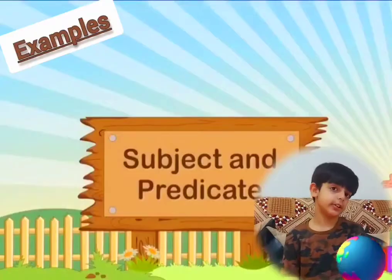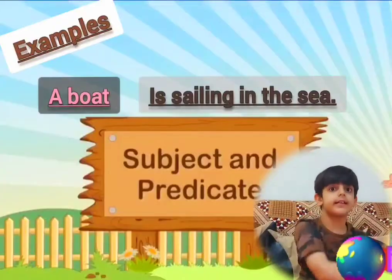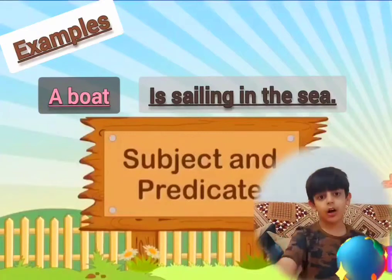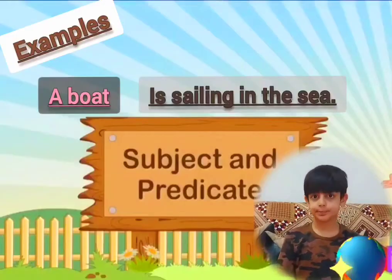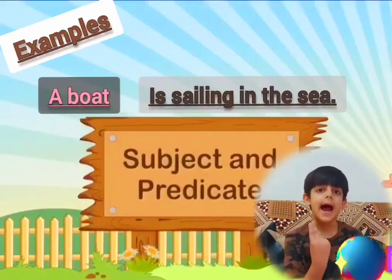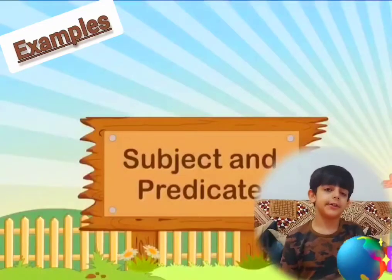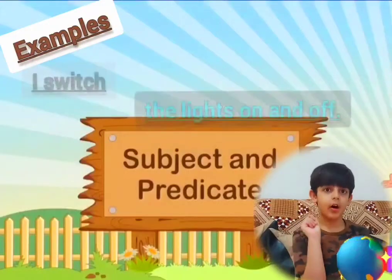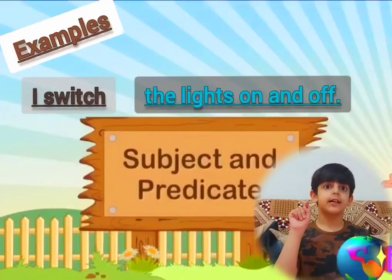Another sentence: 'A boat is sailing in the sea.' Here, 'a boat' is the subject and 'is sailing in the sea' is the predicate. Similarly, 'I switched the lights on and off' — 'I' is the subject and 'switched the lights on and off' is the predicate.